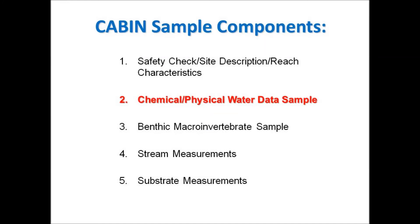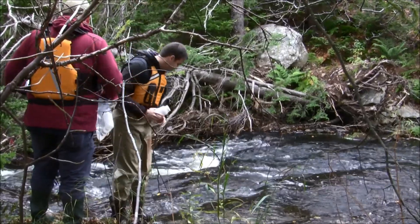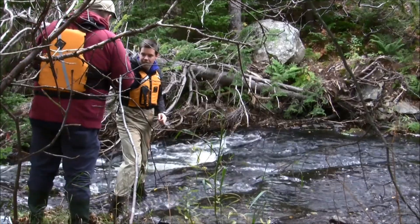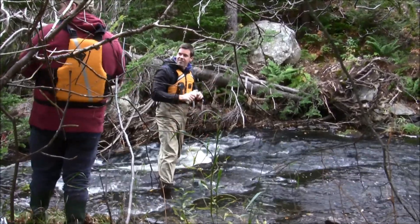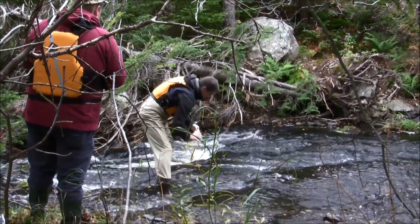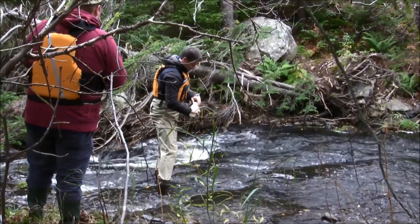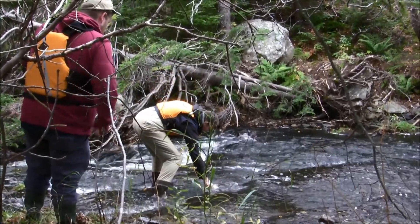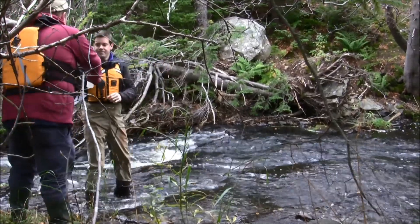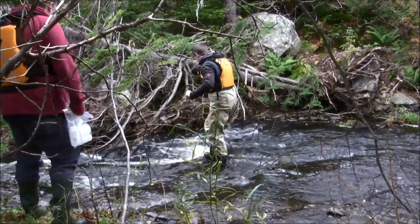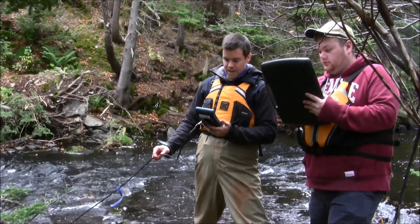Next, let's look at taking the chemical and physical water data sample. When chemical and physical water quality data are collected before the bug sample, it is collected downstream of the intended kick area to avoid disturbance to the upstream invertebrates. If water quality samples are taken after the invertebrate sampling, they are taken upstream of all activity in the river to prevent contamination due to substrate disturbance. Chemical data grab samples are taken in bottles provided by the analyzing lab and must be clearly marked with sample site information and kept cool until they are shipped to the laboratory. Physical parameters such as temperature, pH, dissolved oxygen, turbidity, and specific conductance are measured using a multi-sensor probe. All information is recorded on the field sheets.